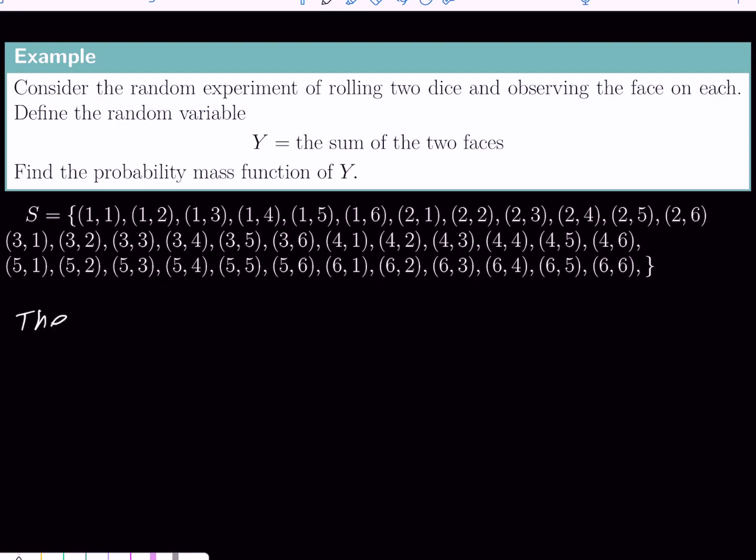Let me write down the support of Y. How do we find the support of Y? Go to the first element of S. First sample is face 1, 1. Y is the sum of the two faces, so that number is 1 plus 1 equals 2. Here, 1 plus 2 is 3. Similarly, we can get the whole numbers: 4, 5, 6, 7.